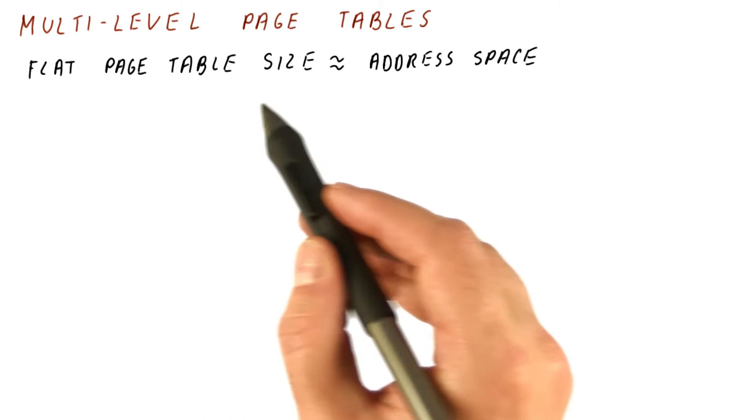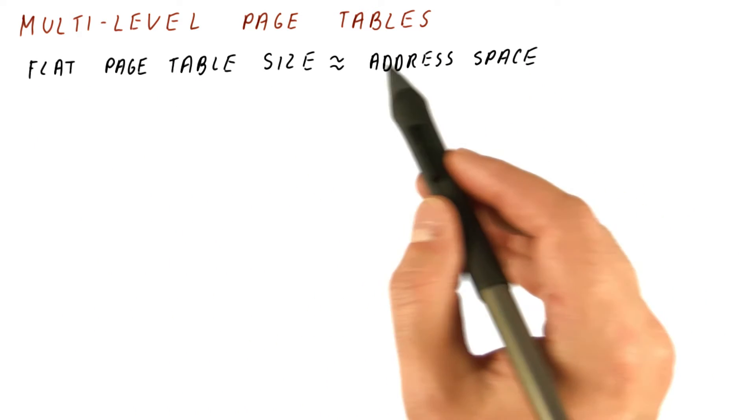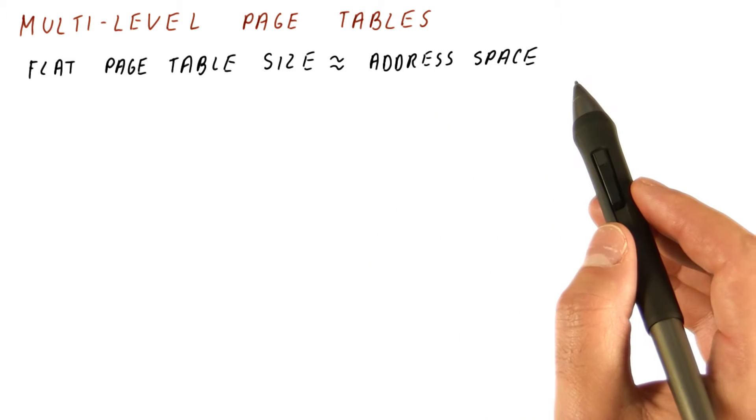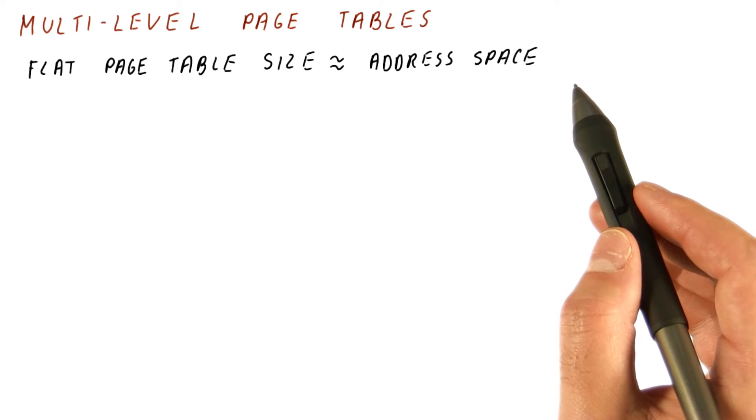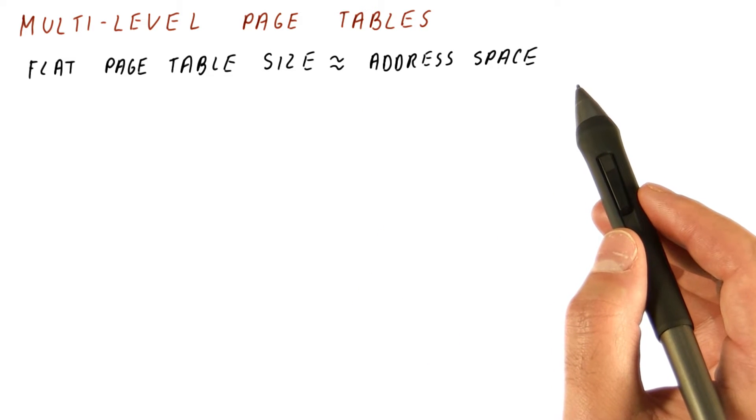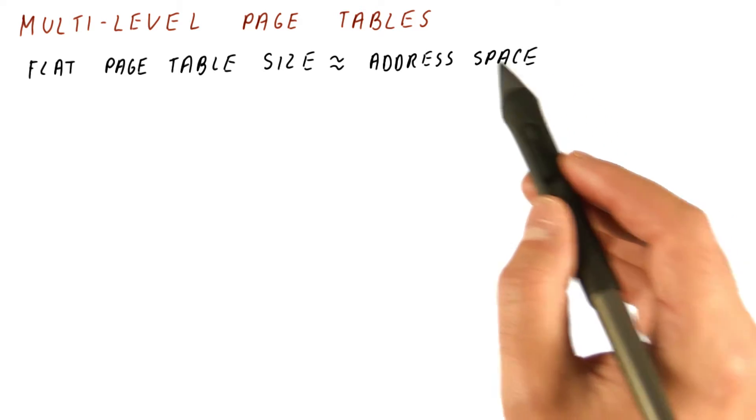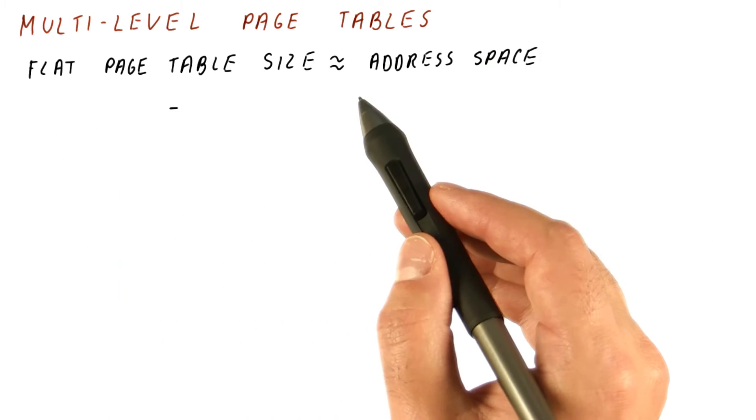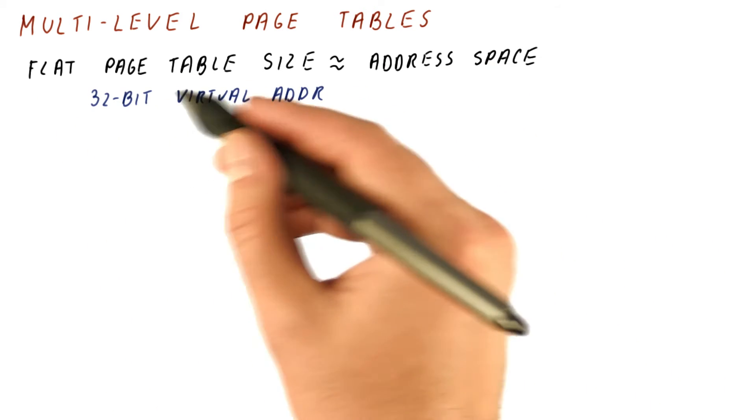The problem with flat page tables is that their size is proportional to the address space, meaning how much memory can the application possibly address, not how much memory it is actually using. For a 32-bit address space, we have seen that we have a reasonably sized page table, so for 32-bit virtual addresses.